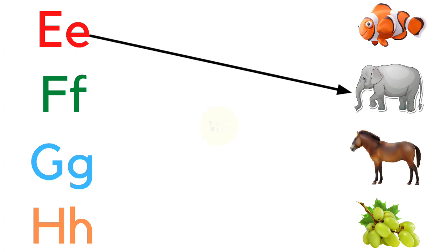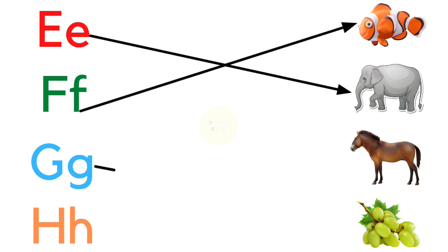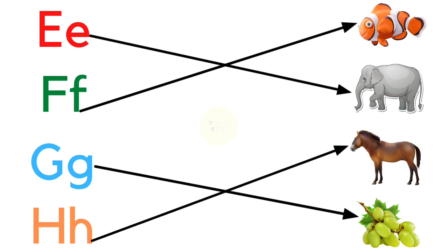E for Elephant, F for Fish, G for Grapes, H for Horse.